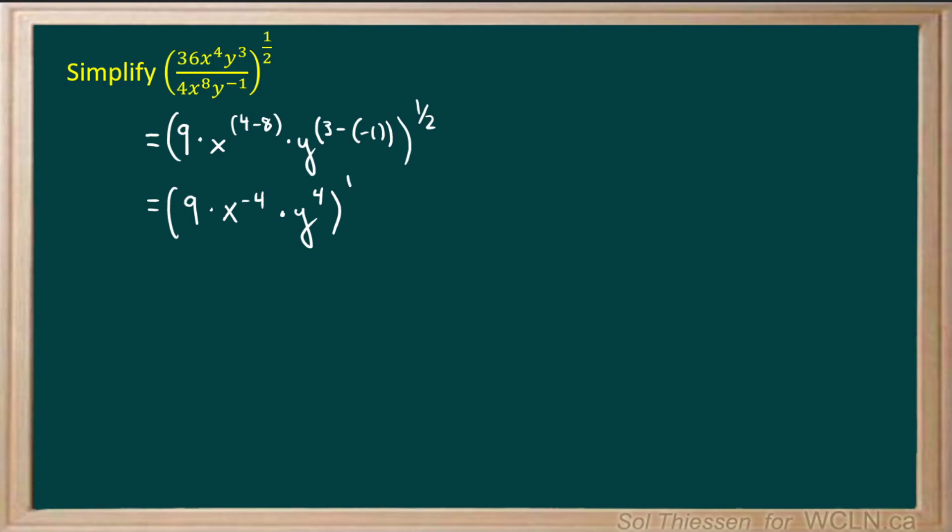And all of this is still to the power of 1 half. Now we're going to distribute this 1 half exponent, so we'll have 9 to the power of 1 half. And then when we apply the 1 half exponent to the variables that already have exponents, the two exponents will multiply together. So we'll have x to the power of negative 4 times 1 half, times y to the power of 4 times 1 half.